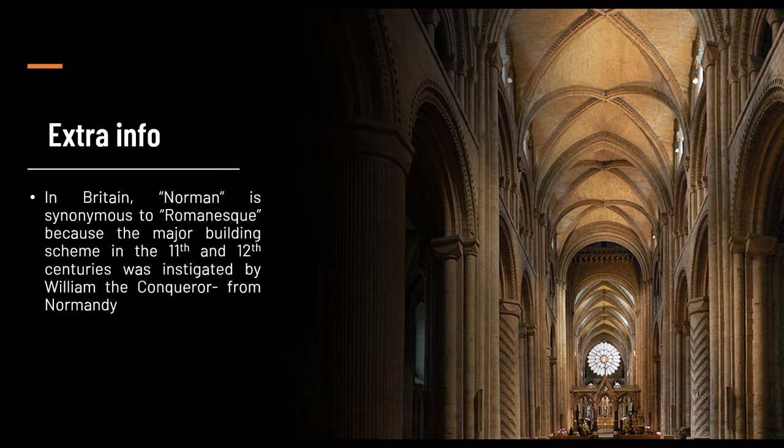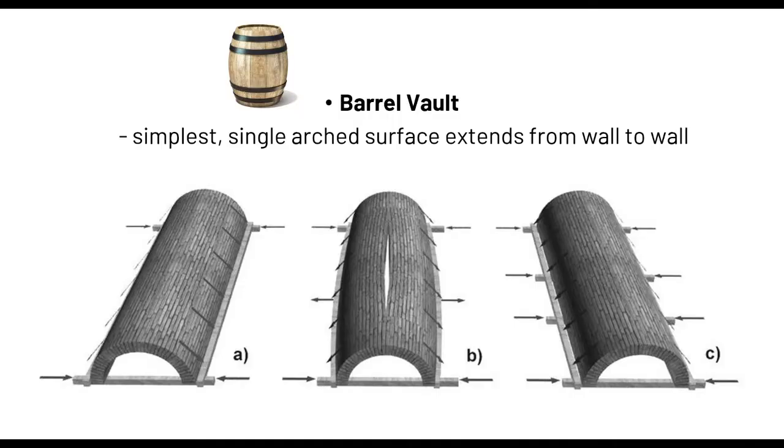Now — whereas the Roman era had arches as their main architectural element, the Romanesque era is identified by the vaulting system. A vault is simply the arch that is extruded — if the arch is from the Roman era, the vault is just that arch stretched out. The first kind of vaulting system is what you call the barrel vault. From the word 'barrel' — like a wine barrel — it is the simplest kind of vault: a single arch surface that extends from wall to wall.